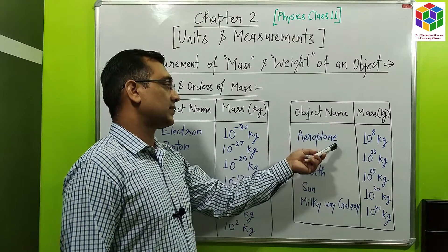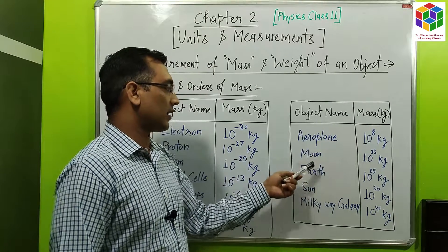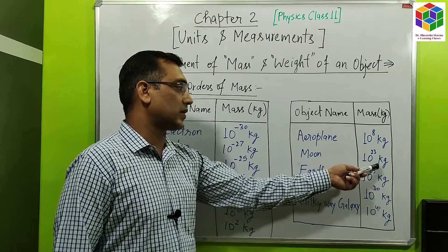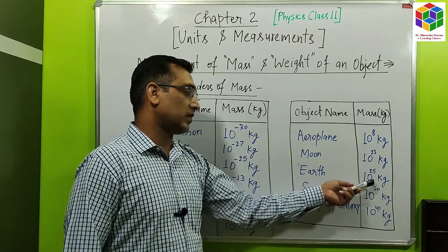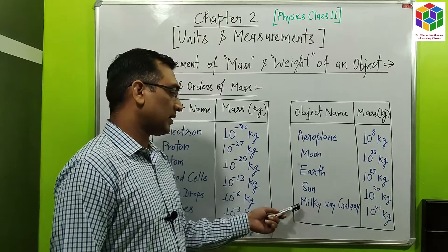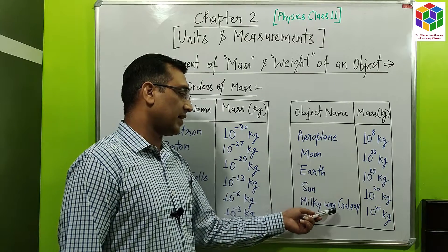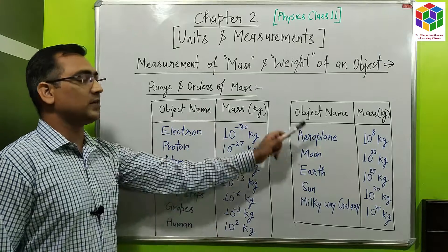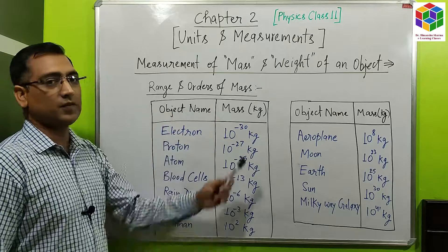The mass of larger objects like an aeroplane is approximately equal to 10⁸ kg. The mass of the moon is approximately equal to 10²³ kg. The mass of the complete earth is 10²⁵ kg. The mass of the sun is 10³⁰ kg. The mass of the Milky Way galaxy is 10⁴¹ kg. By looking at this table, we get a real-life example of the range and order of masses.